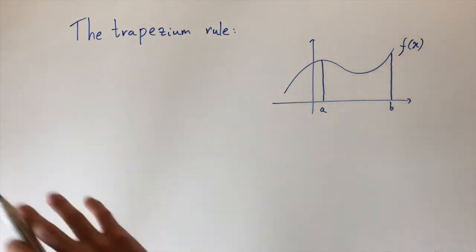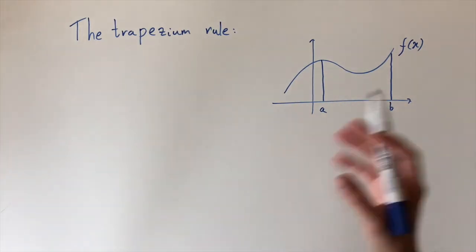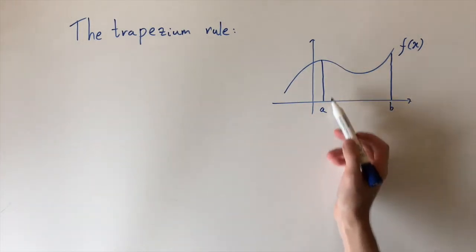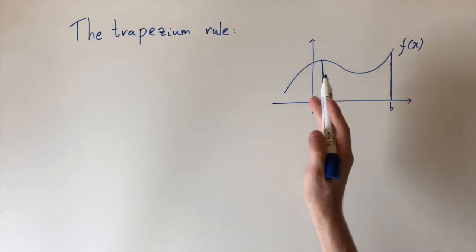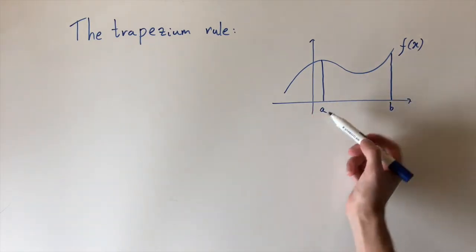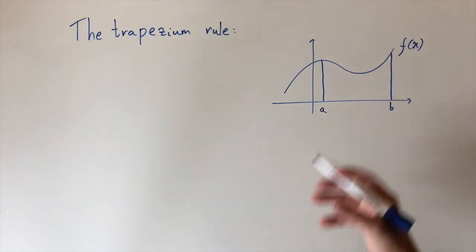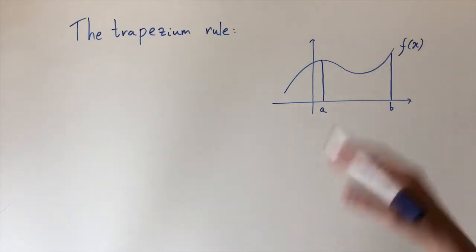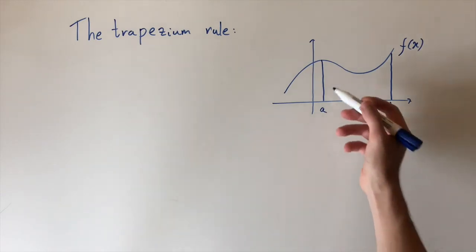The trapezium rule applies to functions and approximating the area under the curve. We know the area exactly is given by the integral of the function f between a and b, but sometimes in practice you get a function that's really horrible and you just can't integrate, or you just don't know what it is.